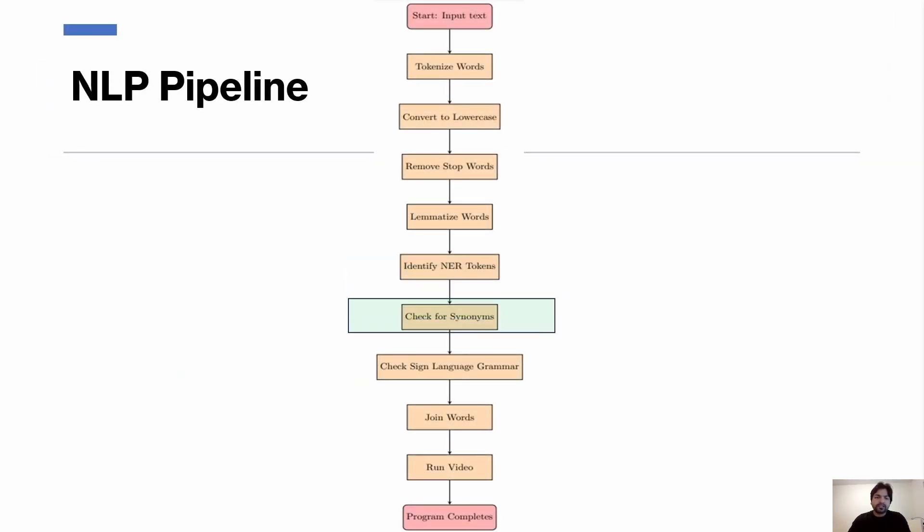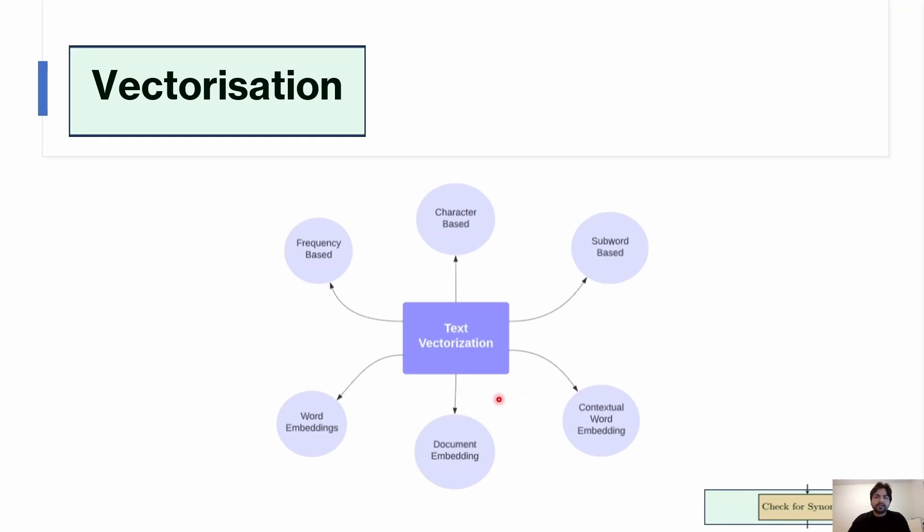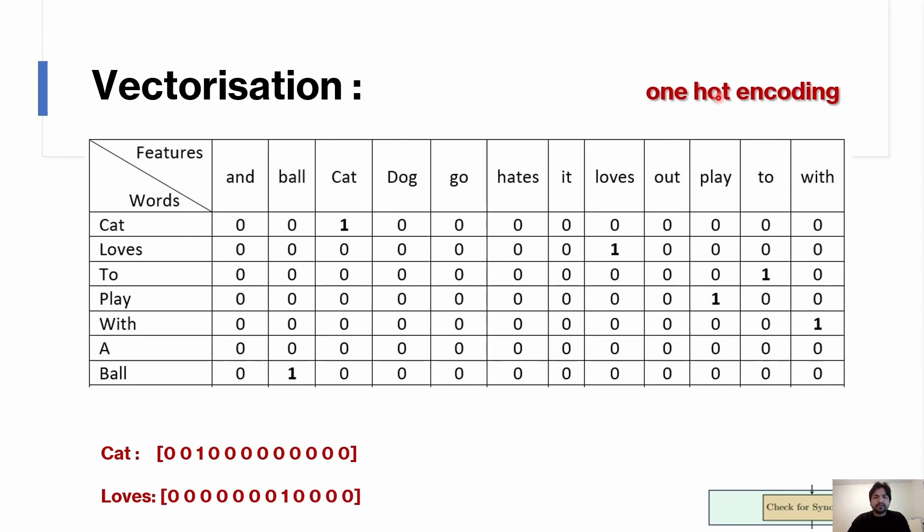After that, the synonyms were checked with the help of vectorization. Vectorization in NLP involves transforming words or text documents into numerical vectors. It helps in computational analysis of text because computers only understand numbers, not text. By representing text as vectors, models can perform mathematical operations for tasks like similarity comparison or classification. One-hot encoding is a simple term - it's like assigning a unique ID to each word in a vocabulary. Each word gets its own spot in a big list, marked with one if it's present and zero if it's not.